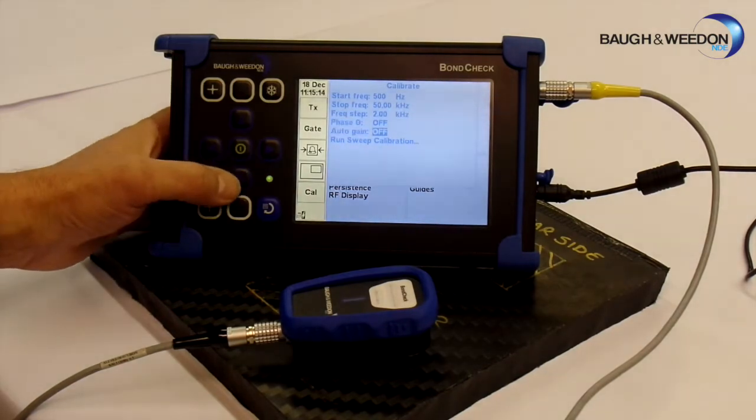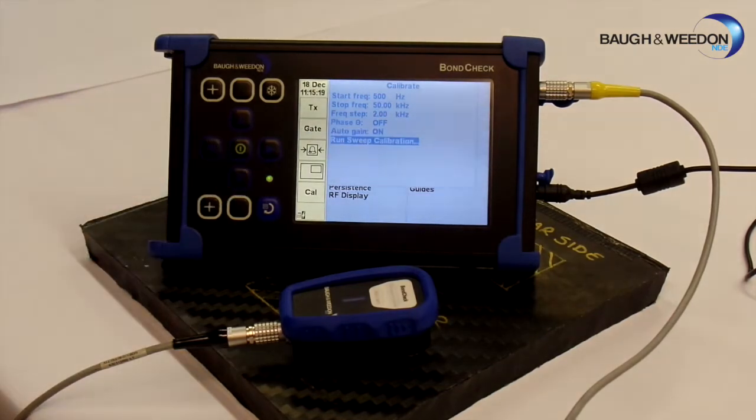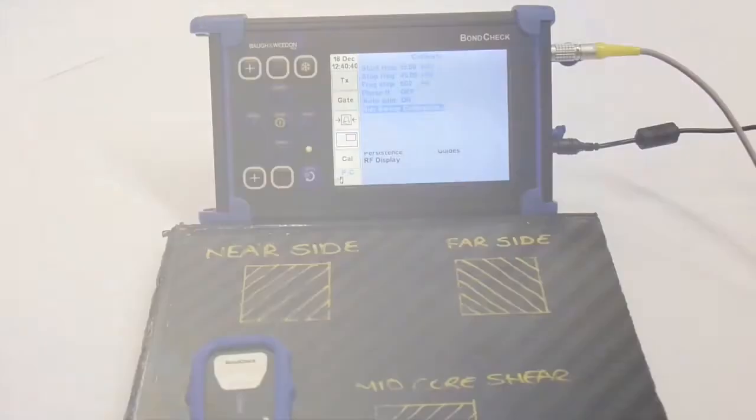So now go down to auto gain, which I am going to turn on, and come out of that, and now go down to run sweep calibration. We are now ready to run the actual calibration prior to carrying out the inspection.